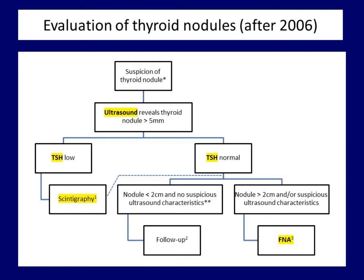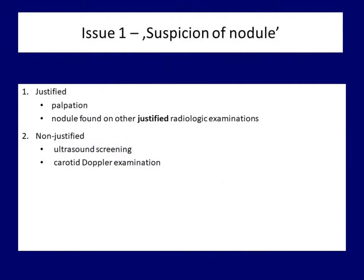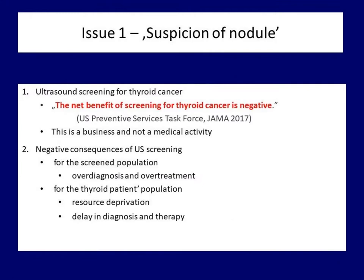Let's look at the critical points of the guidelines. The first is the suspicion of the nodule — in some ways the very essence of the algorithm. The guidelines include lesions which are palpable or suspicious on palpation, and nodules found during other imaging procedures. No guideline considers ultrasound screening to be warranted. It means that neither ultrasound screening nor examination of the thyroid during carotid Doppler examination is justified.